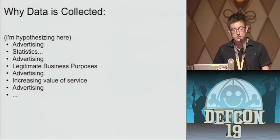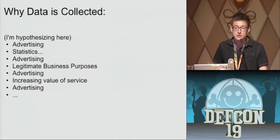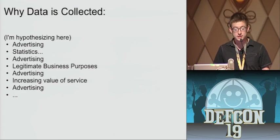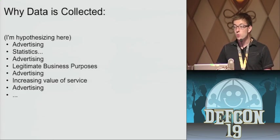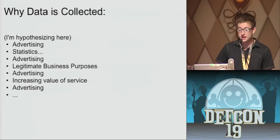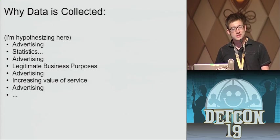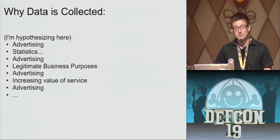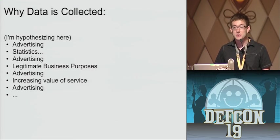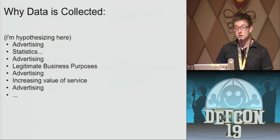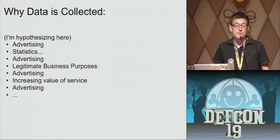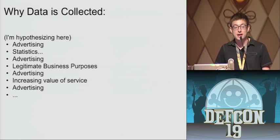Now we're going to look at why data is being collected. I'm hypothesizing here. We've got advertising. We've got statistics — obviously they want to know if you're using your application and what you're using it for. We have legitimate business purposes — maybe an application needs to know what version of Android you're using so it works effectively. We have things that increase the value of a service — it's helpful when you search for pizza that they find pizza near you. And I hope I made my point here: I'm repeating advertising over and over, because advertising is the number one reason why they collect this information. Why do you need where you're located? We need to give you the correct ads. Why do we need to know Wi-Fi around you? That helps us find your location, which helps you get proper ads. Why do you need to know my device version? If we're going to run an ad on your screen, we need to know what resolution it's at.